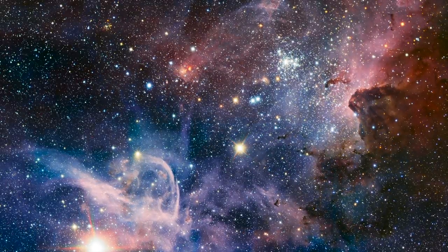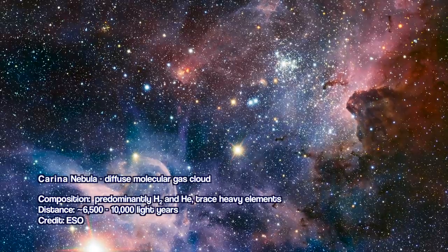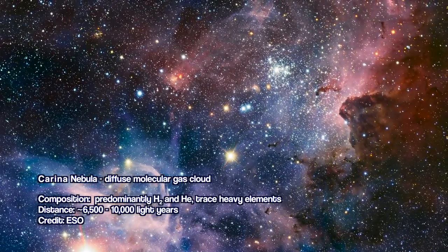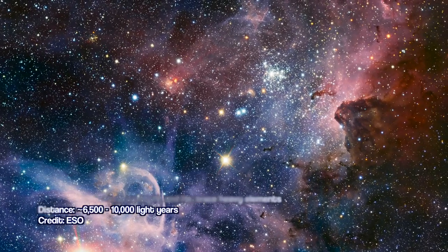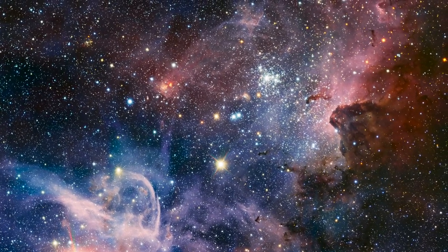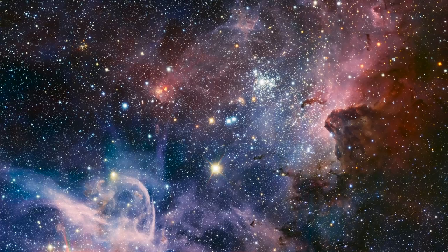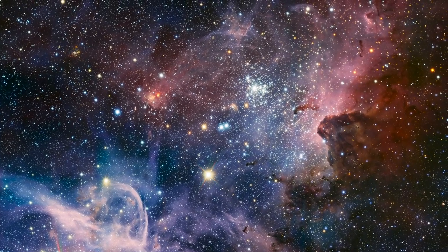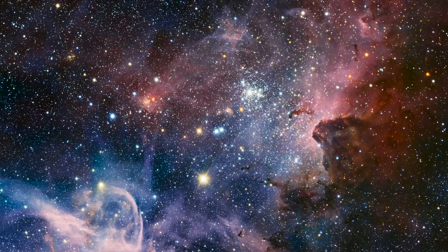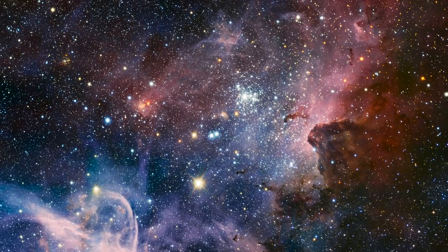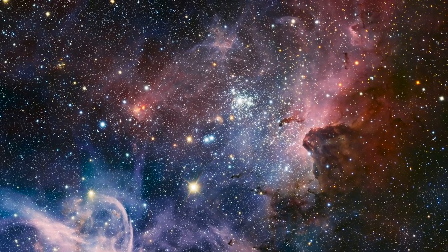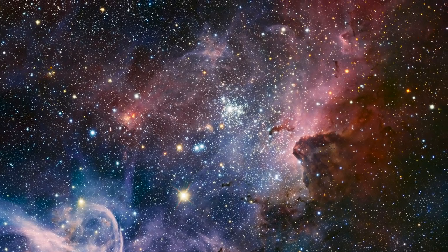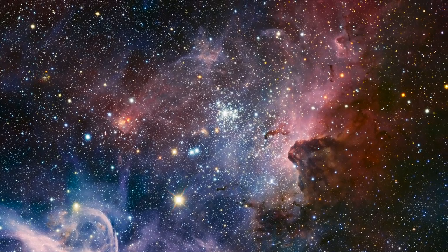Here's a nice example. This is the Carina Nebula, a star-forming region. It's a diffuse molecular gas cloud, meaning it's primarily made up of molecular hydrogen and helium, with a sprinkling of trace elements in there too. Our Sun would have begun in a region very much like this. Inside this structure, you can see thicker areas where the gas and the dust are denser and light doesn't pass through them.